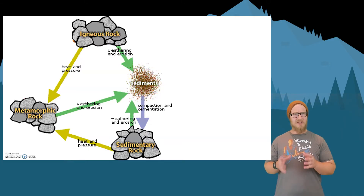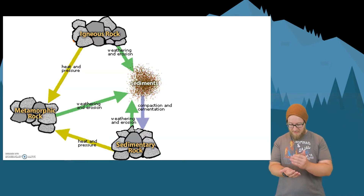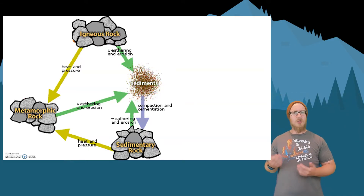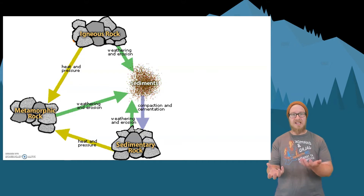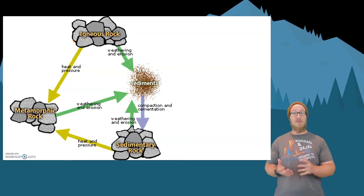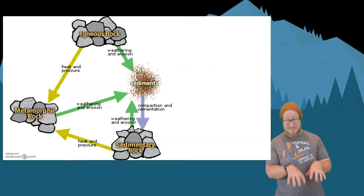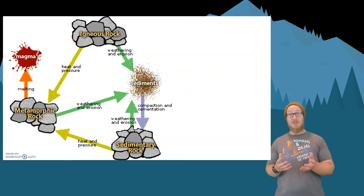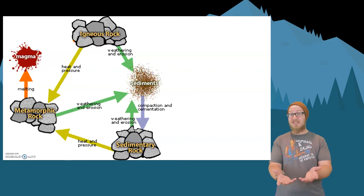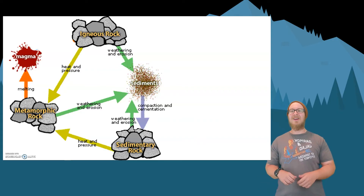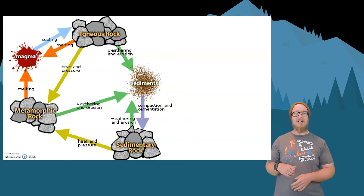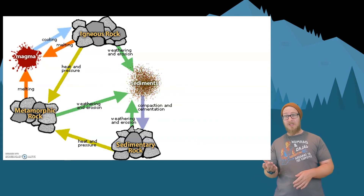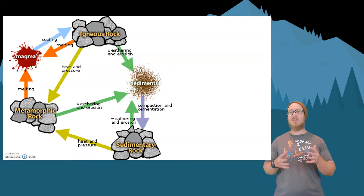Let's take this process to the next logical extreme. What happens when you apply even more heat and pressure to metamorphic rocks? By that time you're actually very deep in the earth and it would melt into magma. Of course, the magma can then cool slowly or quickly into the different types of igneous rocks.